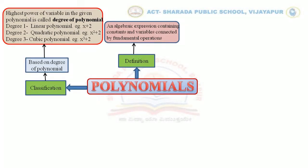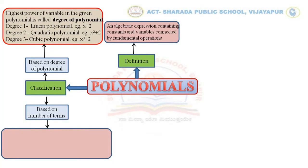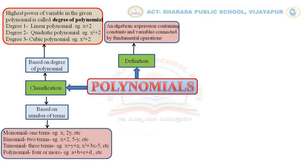The other type of classification is based on the number of terms. A term is the part of an algebraic expression where constants and variables are separated by plus or minus symbols. Depending on the number of terms: if there is one term, it is called a monomial — for example, x, 2y, etc. Two terms is a binomial — example, x plus 2, 5 minus y, etc. Three terms is a trinomial — example, x plus y plus z, or x squared plus 3x minus 5, etc.